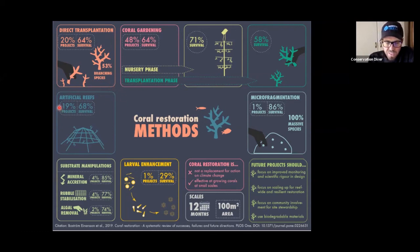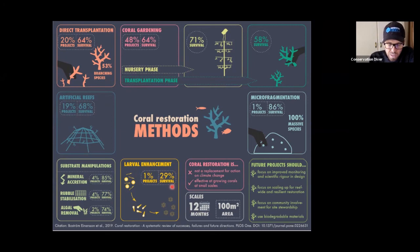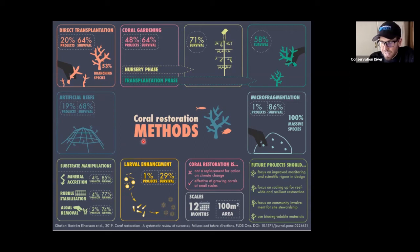Looking at the other techniques: artificial reefs account for about 20% of projects in the world. Larval enhancement is only 1% of projects around the world and has quite low survival rates — we'll talk more about that. And we can also see mineral accretion, which we covered in the last talk. That gives you an idea about what's out there and what projects people are working with.